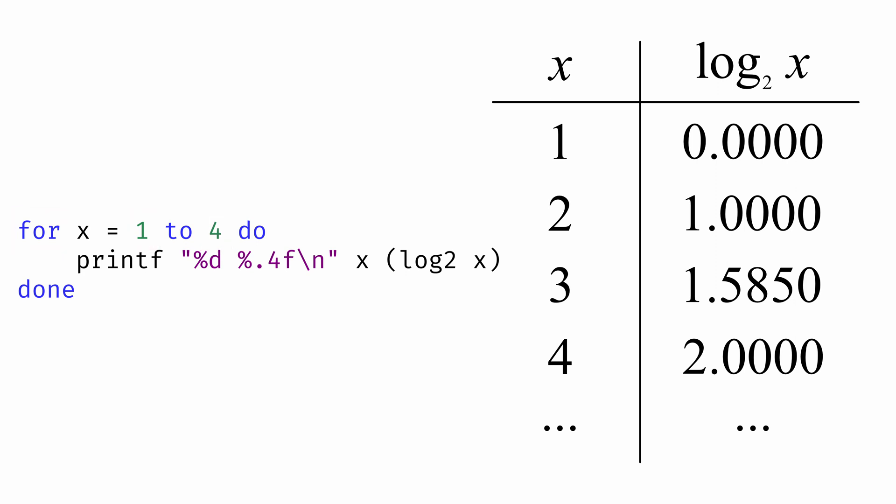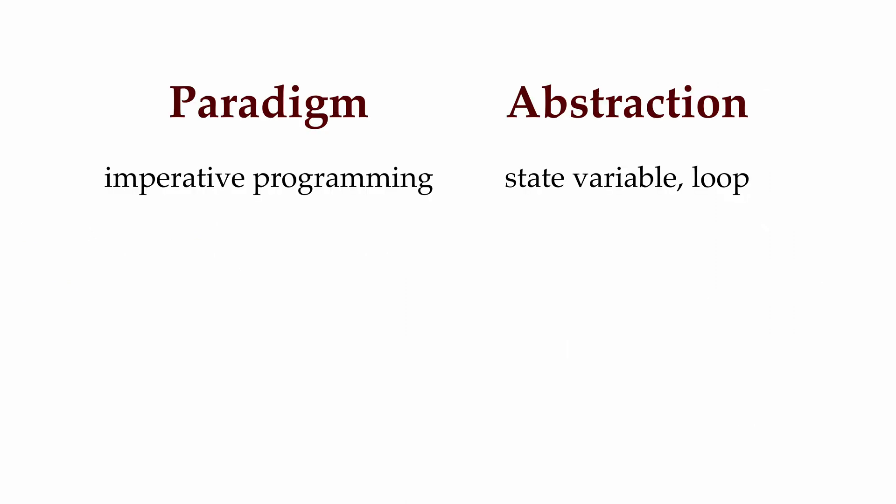Imperative programming isn't the only programming paradigm, though. Another important paradigm is that of functional programming, where instead of the state variable or the loop, the key abstraction mechanism is the function, a mapping from inputs to outputs.